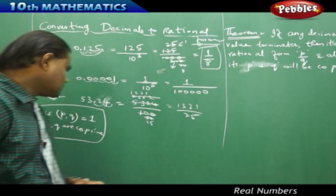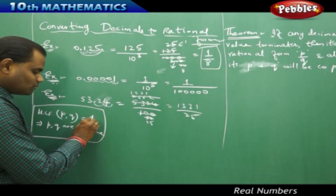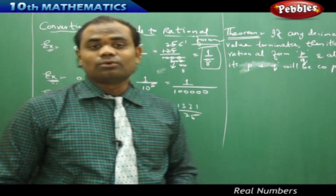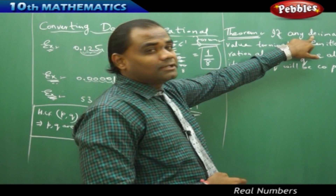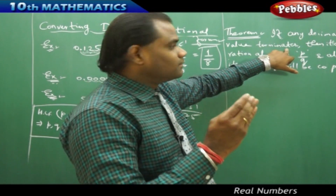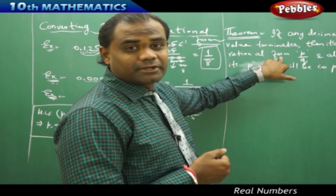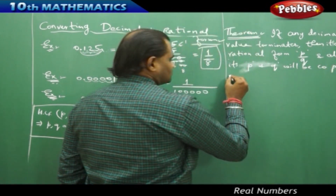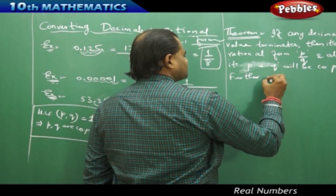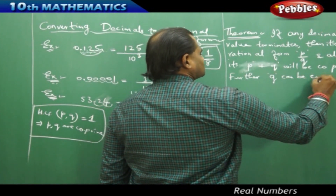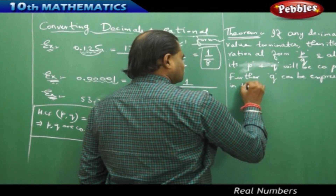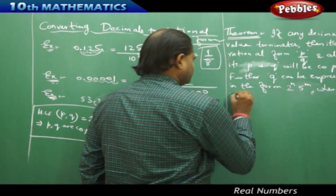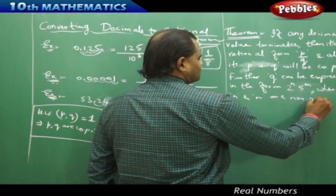When I want to test for two numbers to be co-primes, I find the HCF of those two numbers, and if I get the HCF to be 1, the two numbers are said to be co-primes to each other. Furthermore, Q can be expressed in the form 2 power n into 5 power m, where n and m are non-negative integers.